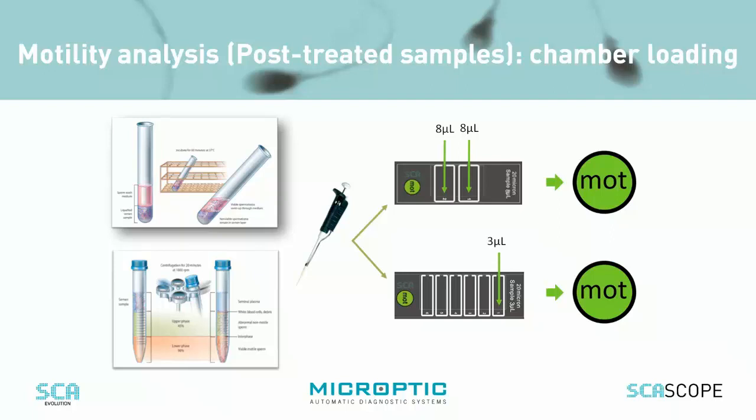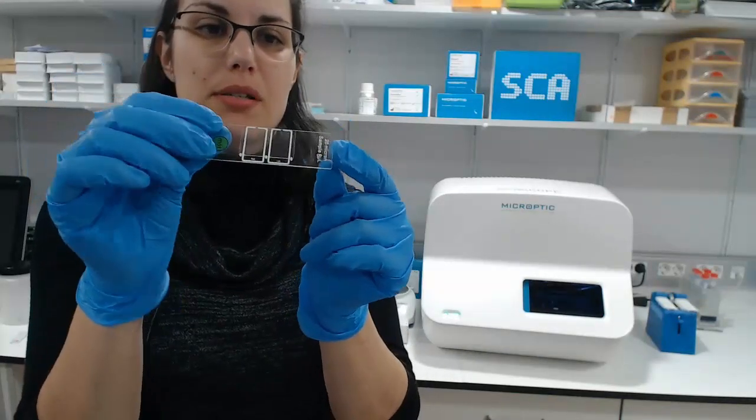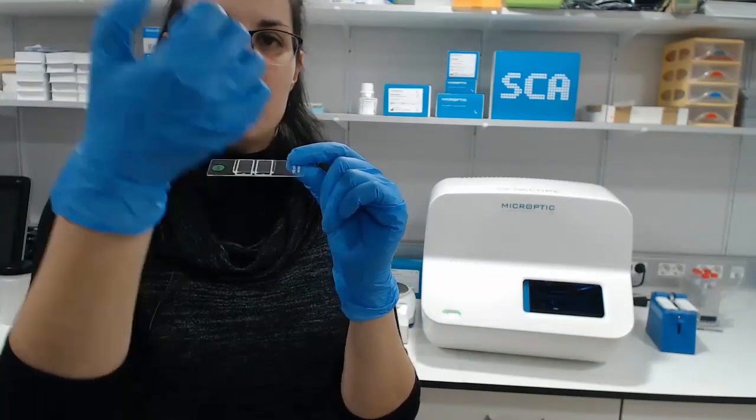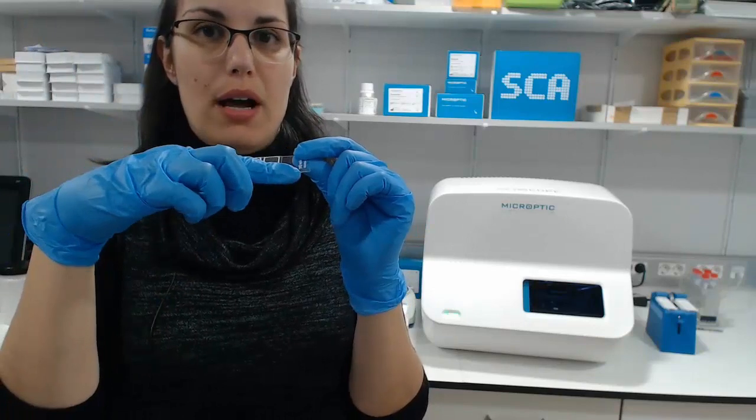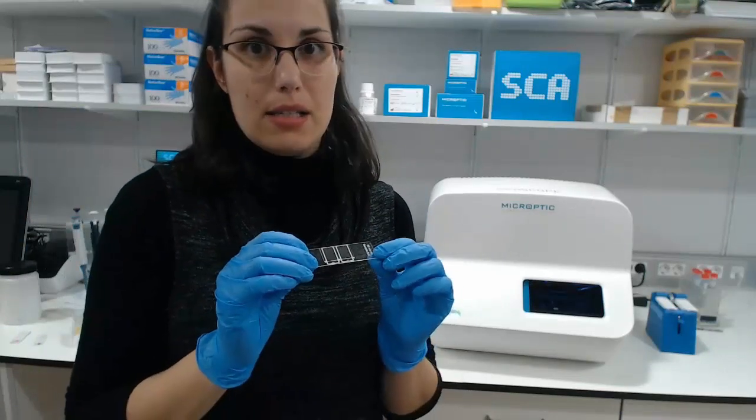If you want to follow WHO rules and do replicates for each sample, you can use counting chambers with two chambers. There is also the possibility to select another type of chambers allowing loading of six different patients per slide. Here is an example of two chambers — we will load the first chamber, then the second chamber, and dry the excess of liquid to stop drifting inside the chamber.